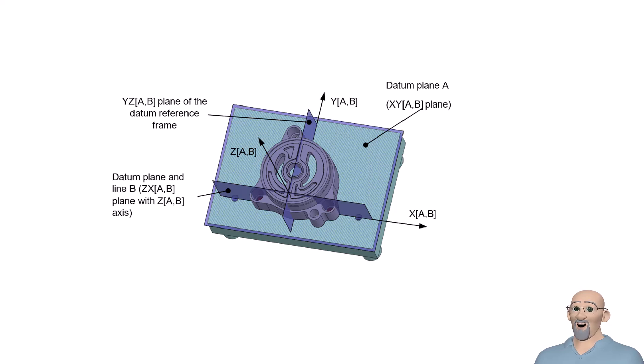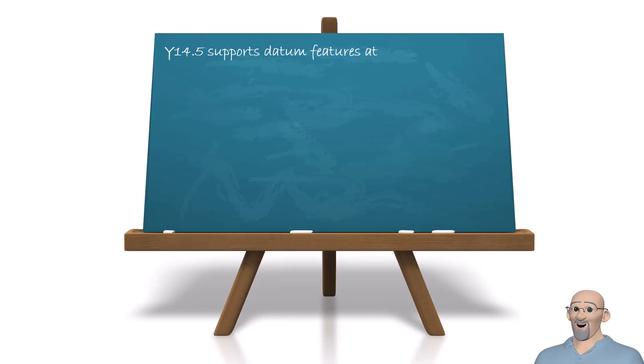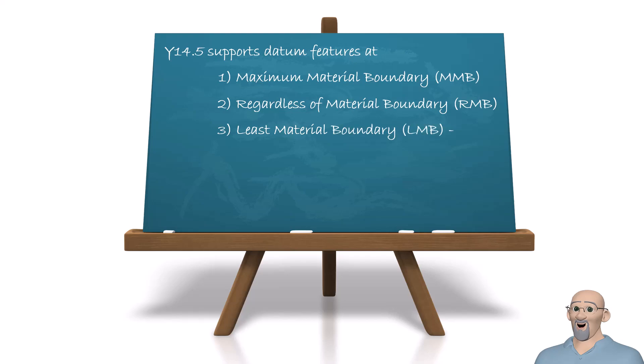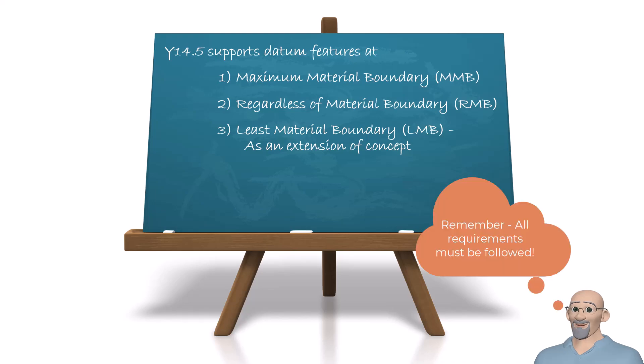Y14.5 describes establishing a datum from a pattern of two or more features. If the pattern consists of parallel features of size, Y14.5 supports datum feature patterns at maximum material boundary, or MMB, and at regardless of material boundary, or RMB. A pattern of parallel datum features of size referenced at least material boundary, or LMB, is not explicitly supported by the 2009 and 2018 standards, but it is a logical extension of the concept. When doing this, all the normal requirements for datum feature simulators at RMB, MMB, or LMB must be followed.